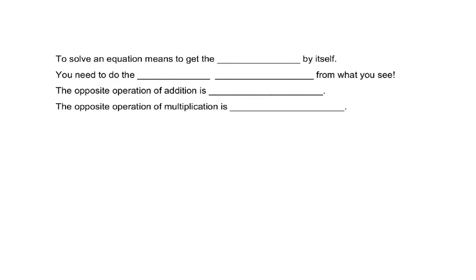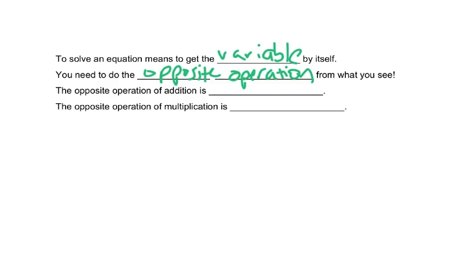To solve an equation means that you need to get the variable or the letter by itself. You need to do the opposite operation from what you see. The opposite operation of addition is subtraction, and the opposite operation of multiplication is division, and vice versa.